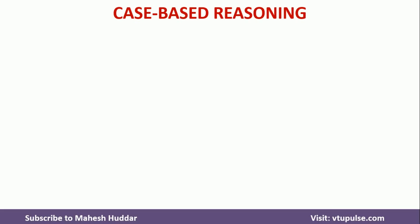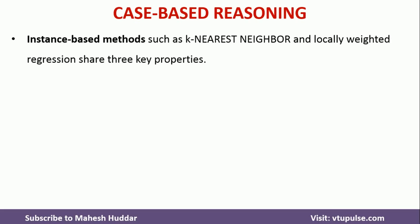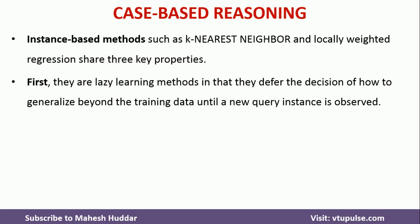Before we consider Case-Based Reasoning or Learning, first we will try to understand the key properties of instance-based methods such as k-nearest neighbor and locally weighted regression algorithms. The first key property is that these methods are lazy learning methods — unless and until we get a new query instance, these methods will not do any learning. Whenever we get a new instance, we use the training data and the new instance is classified based on either the nearest neighbors or locally weighted nearest neighbors.